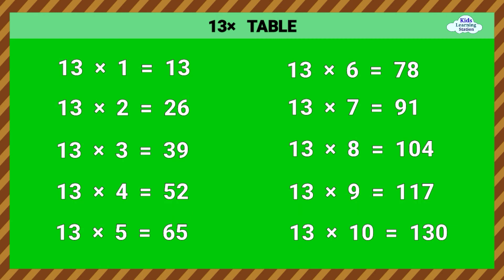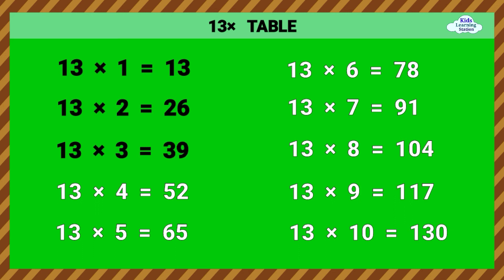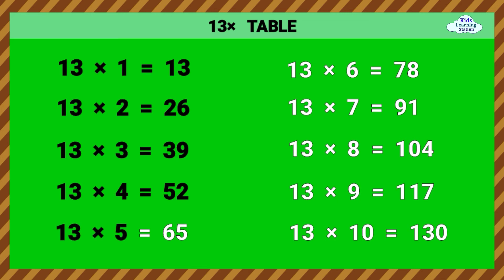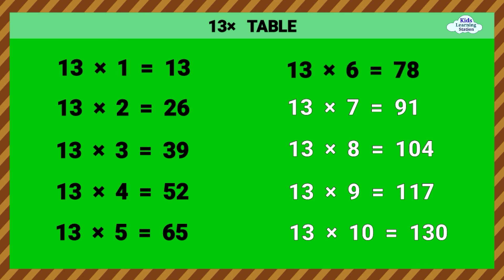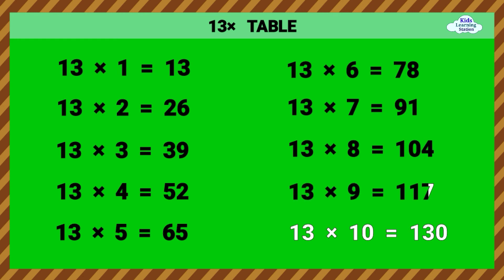Thirteen Times Table. 13 times 1 equals 13. 13 times 2 equals 26. 13 times 3 equals 39. 13 times 4 equals 52. 13 times 5 equals 65. 13 times 6 equals 78. 13 times 7 equals 91. 13 times 8 equals 104. 13 times 9 equals 117.